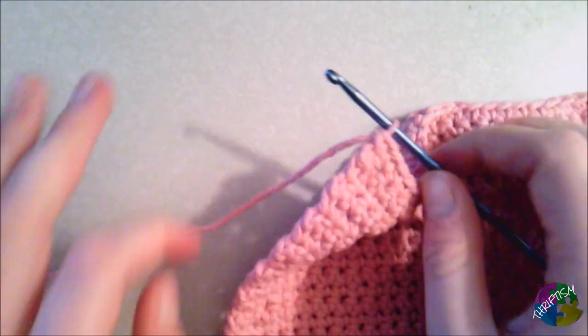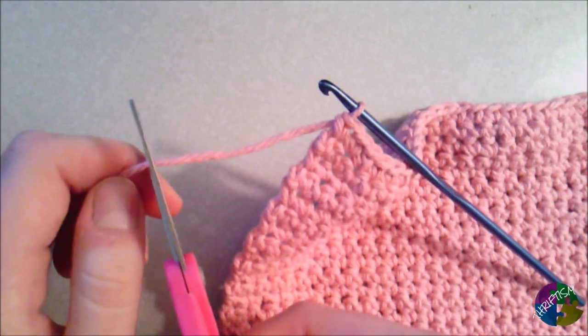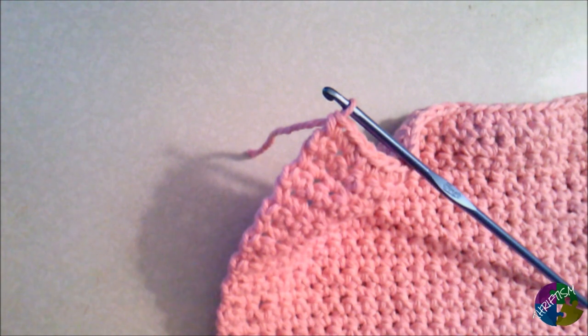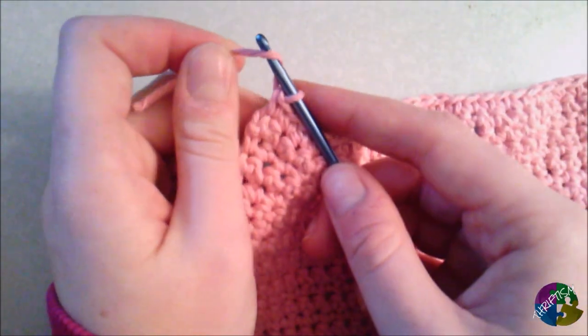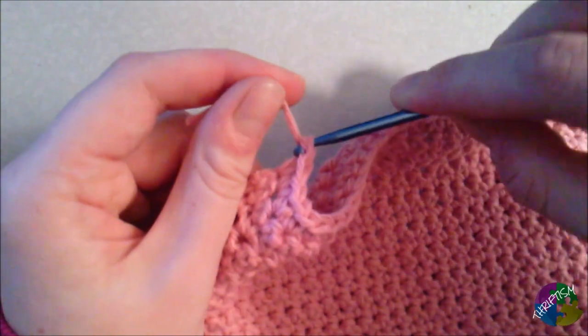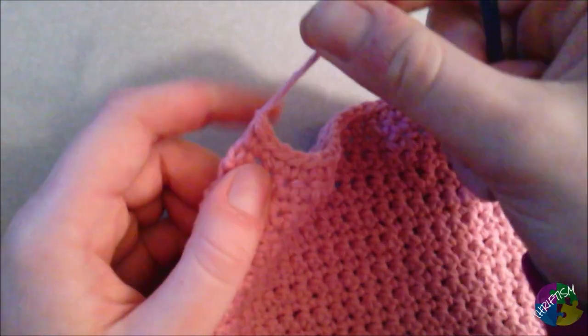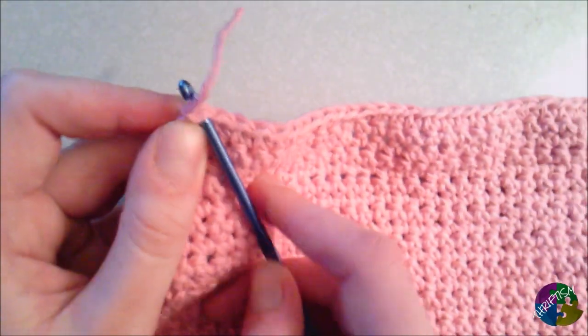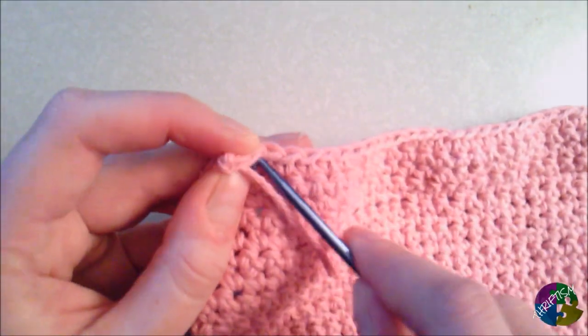And then to finish this, we'll actually need to grab our scissors, and cut off our tail here. Now, once we have this, you'll just want to do kind of a slip stitch of yarn over, pull through, pull the whole tail through, and pull that tight. And then, to finish this off, we'll kind of want to go through here, and just weave this tail in through.